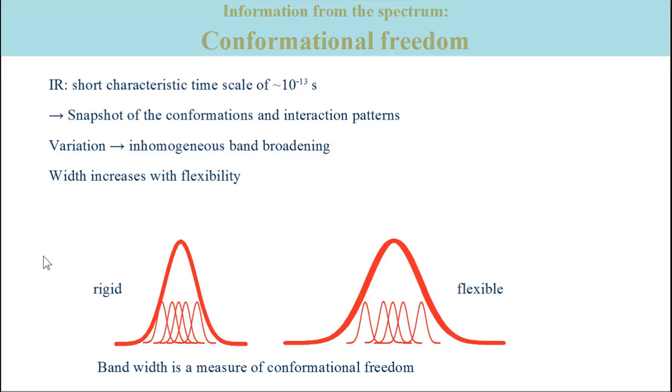This has the following consequence for a sample that contains only molecules with the same chemical structure. For such a sample, a molecule with a certain conformation and a certain interaction pattern will absorb light of a frequency that is slightly different from the frequency absorbed by a molecule with a different conformation and different interactions. Therefore, the absorption band will be broadened inhomogeneously.